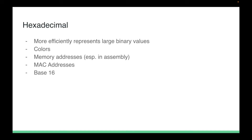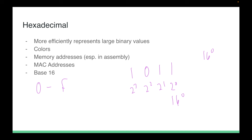The next type of value we'll work with is hexadecimal. Hexadecimal is used to efficiently represent large binary values, to represent colors in HTML or CSS with hex color codes, to represent memory addresses (as mentioned earlier), and MAC addresses. Hexadecimal is base 16. On the IB exam we normally just have two-digit hexadecimal numbers.